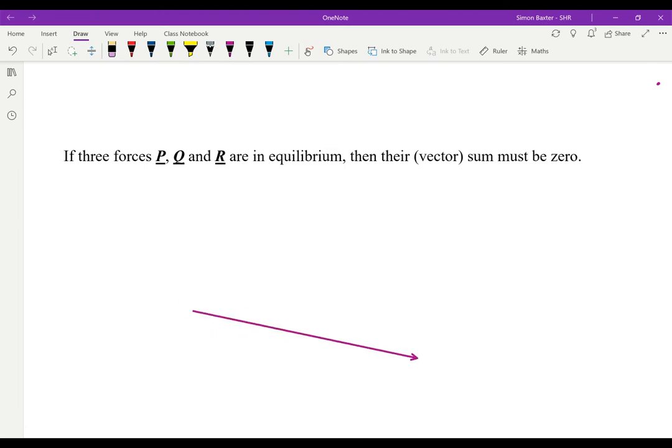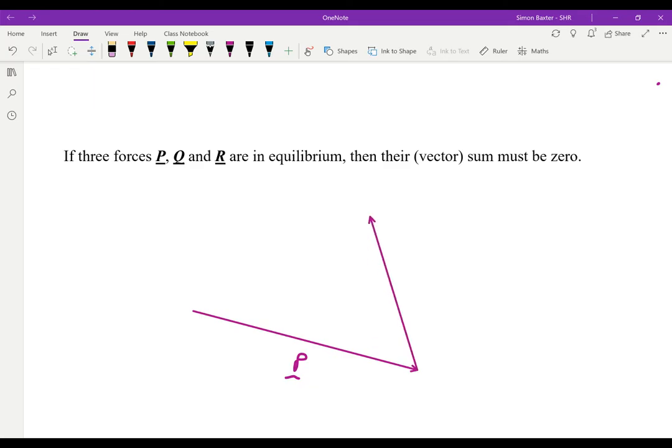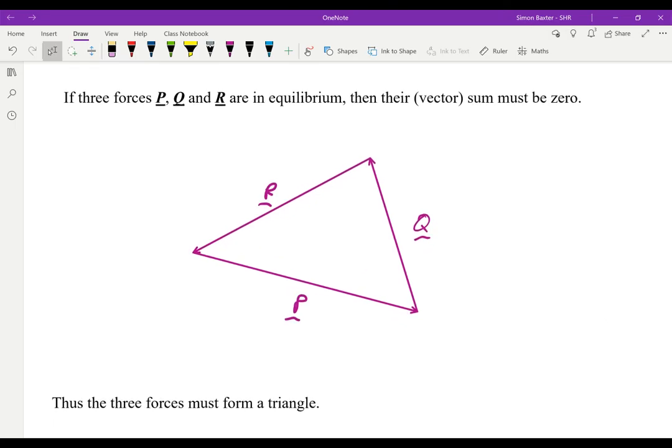We could have a force P. If I add to that a force Q, and then add a force R, if they're going to be in equilibrium, the three forces must add up to zero. Therefore, if I start there, I must end up back where I started. I will have a triangle of forces. P plus Q plus R will form a triangle. That must be true. Whenever I have three forces which are in equilibrium, the three forces must form a triangle.